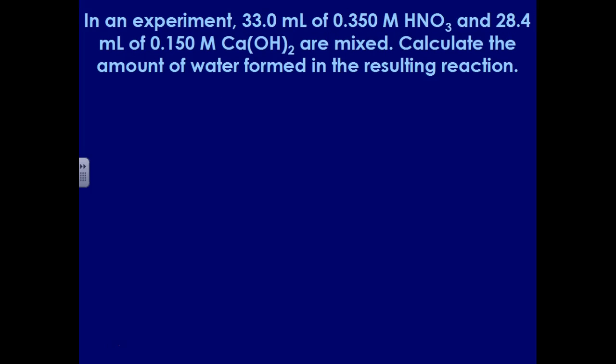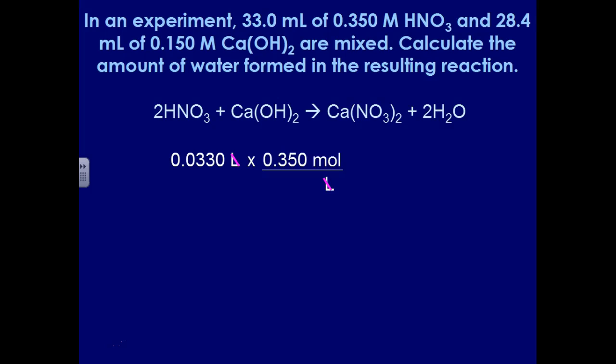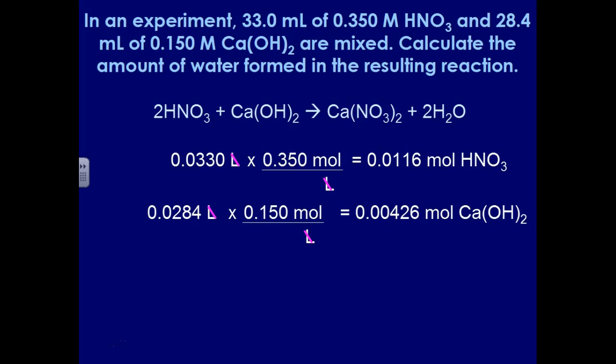And so our final question is going to be figuring out about one of the products. This time I give you information about both reactants, and I want to know how much water would be made when the reaction is complete. So I have HNO3 and calcium hydroxide. Again, that's going to make a two to one ratio. Water would be formed along with the calcium and nitrate compound, Ca(NO3)2. I know the volume and molarity for both reactants, so I can use those to find the moles of the HNO3 and the Ca(OH)2 that are available to react, by multiplying the molarities by their volumes in liters. So when I did that for HNO3, I got 0.0116 moles, and when I did that for calcium hydroxide, I got 0.00426 moles.